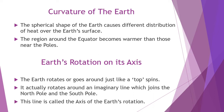Now let us see the curvature of the Earth. The spherical shape of the Earth causes a different distribution of heat over the Earth's surface. In the previous lesson, we studied the angle of incidence — where the equator area is bulgy, the Sun's rays hit at 90 degrees, straight forward. As we go towards the North Pole and the South Pole, the temperature reduces because the angle of incidence is slanting, and because of that reason it decreases. Because of the spherical shape or the curvature of the Earth, these changes can be found.